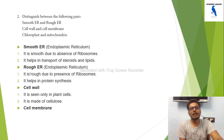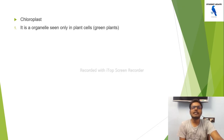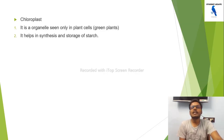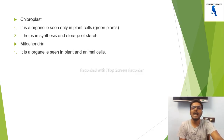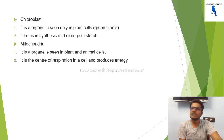The cell membrane is found in both plant and animal cells and is made up of protein and lipids. Chloroplast is an organelle seen only in plant cells, which are green in color. It helps in synthesizing and storing starch. Mitochondria is an organelle seen in both plant and animal cells, and it is the center of respiration in the cell, producing energy.